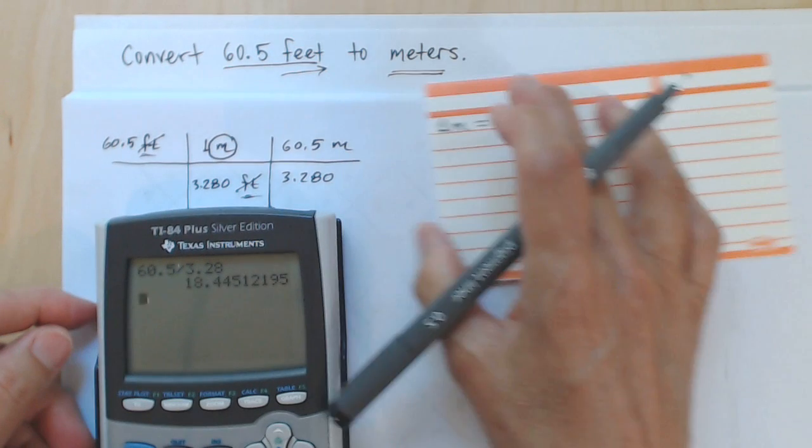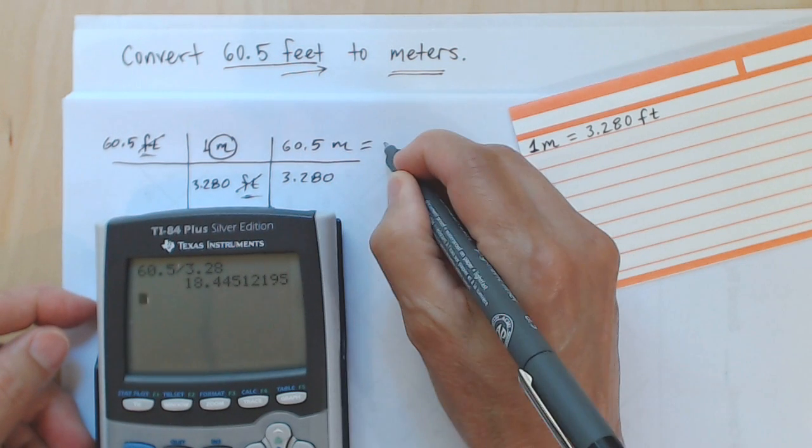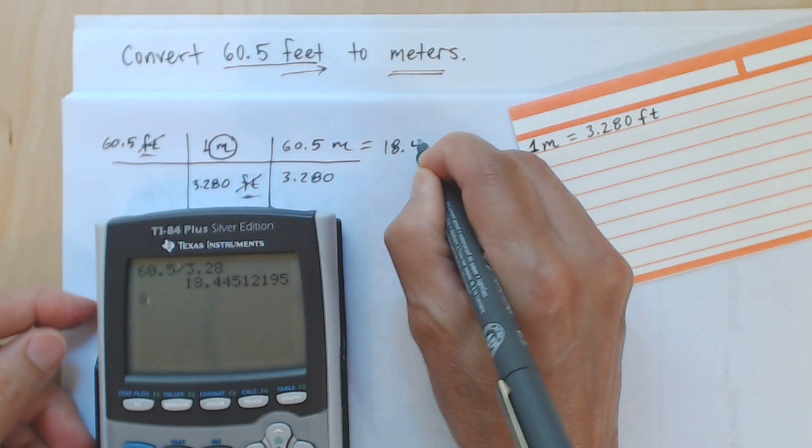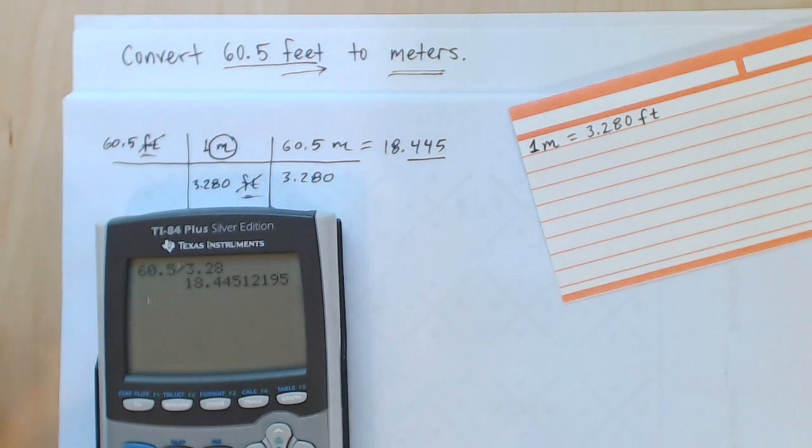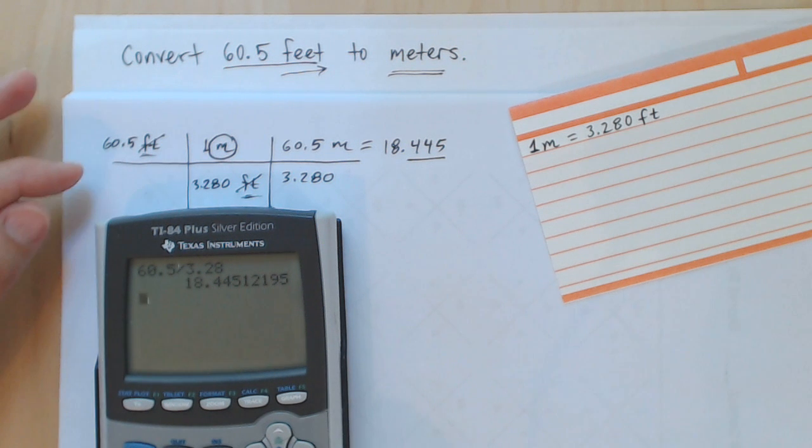I'll get 18. I'll write equals 18.445. I'll carry three digits just so I can use them in later calculations. And that is once again the fence method for converting units.